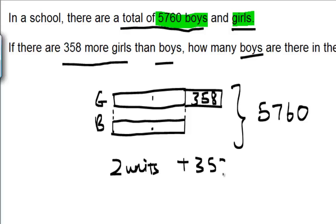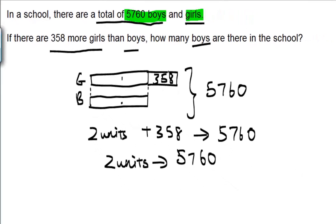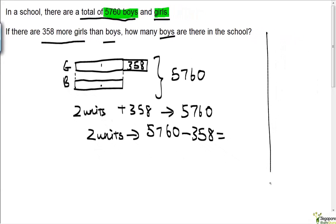Let's write that down. Two units plus 358 is equal to 5760. So these two units here must be equal to 5760 minus 358. Let's work it out here.